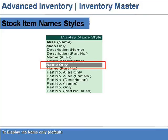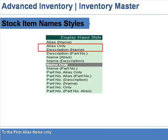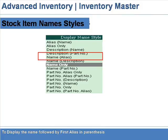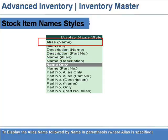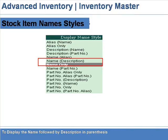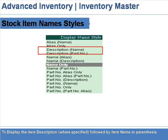Name Only: to display the name only — this is the default. Alias Only: to display the first alias name only. Name (Alias): to display the name followed by the first alias in parenthesis. Alias (Name): to display the alias name followed by name in parenthesis, where alias is specified. Name (Description): to display the name followed by description in parenthesis. Description (Name): to display the item description, where specified, followed by item name in parenthesis.